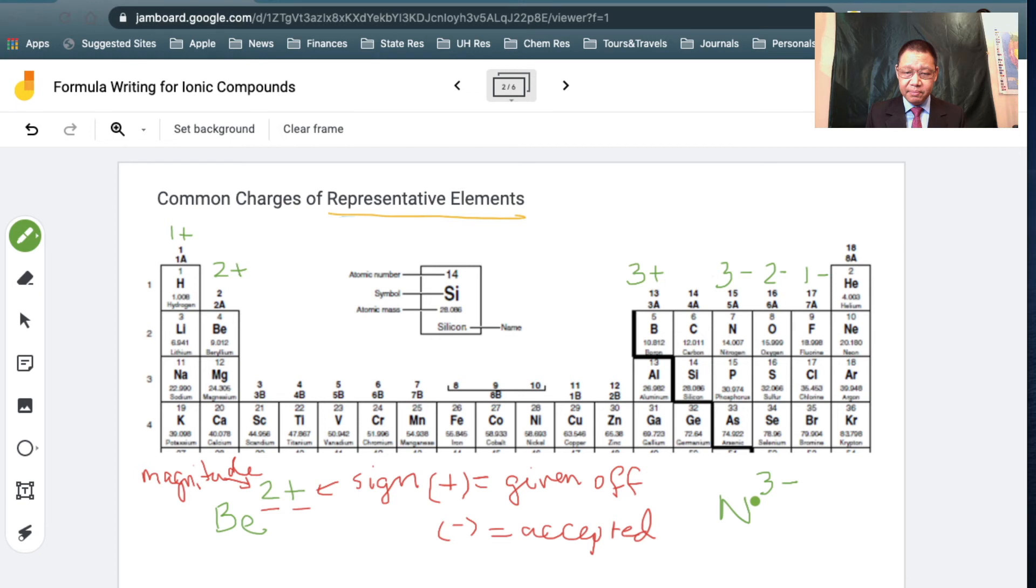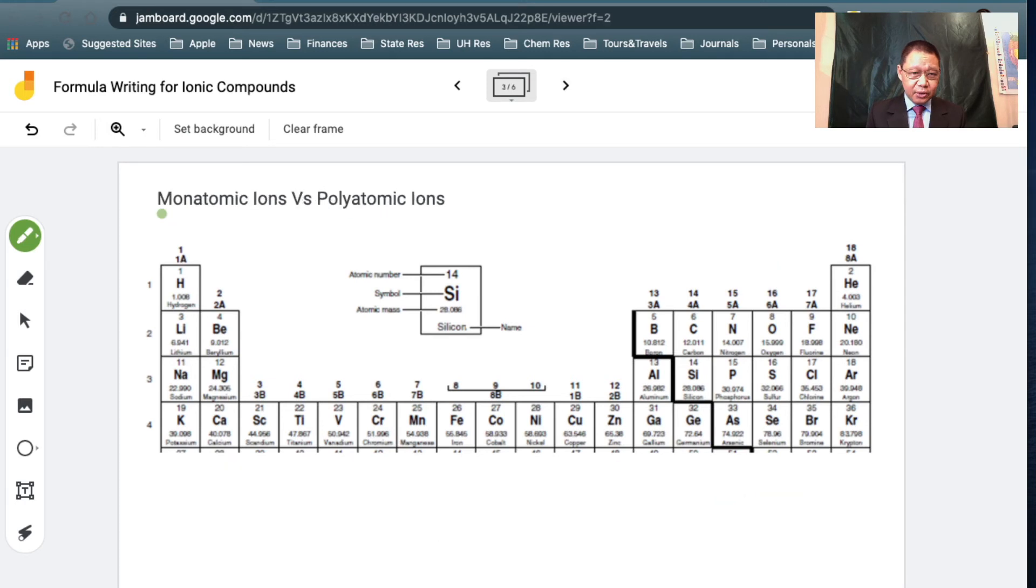Now, these are what you would call monatomic ions. When you have a charge, you have an ion. So those are called monatomic ions, for mono meaning one atom. It's a single atom ion.